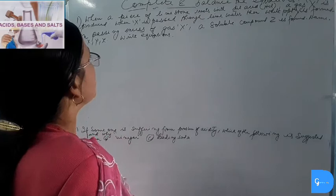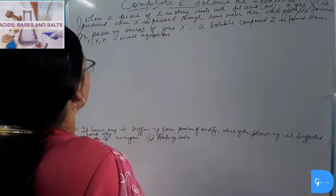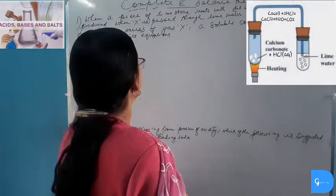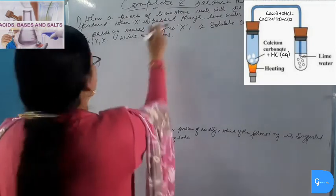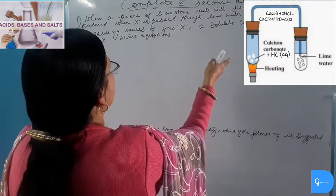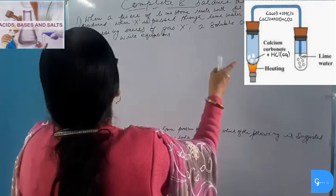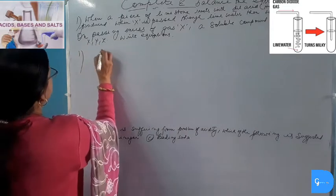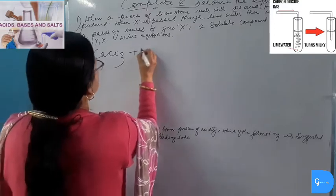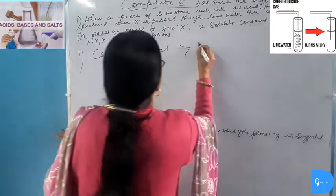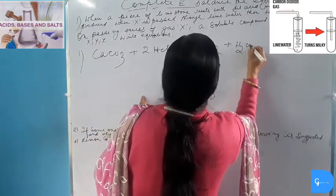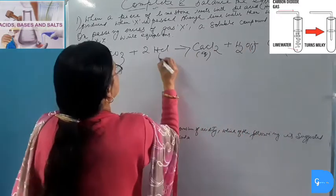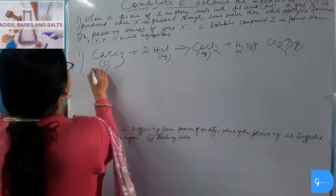A piece of limestone (CaCO₃) reacts with dilute hydrochloric acid to produce gas X. When X is passed through lime water, a white precipitate (Y) is formed. On passing excess of gas X, a soluble compound Z is formed. Gas X must be Carbon Dioxide, because CO₂ is the only gas that turns lime water milky. Equation: CaCO₃(s) + 2HCl(aq) → CaCl₂(aq) + H₂O(l) + CO₂(g).